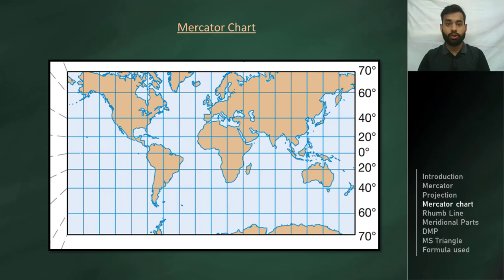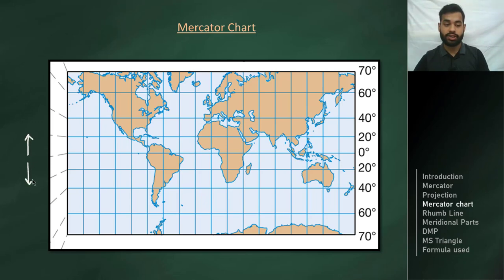The parallels of latitude on this chart appear as straight lines and are parallel to each other. One notable thing is that when going from the equator towards the poles in either direction, the distance between two consecutive parallels of latitude increases as the latitude increases.